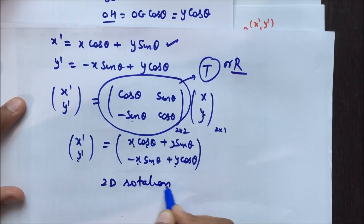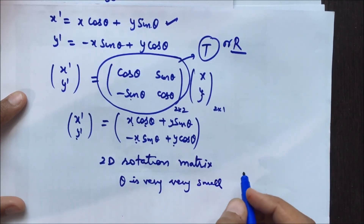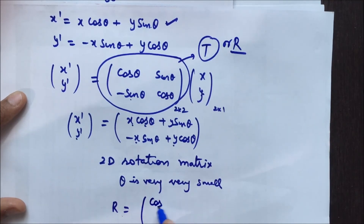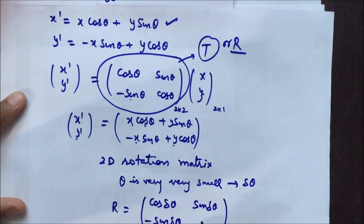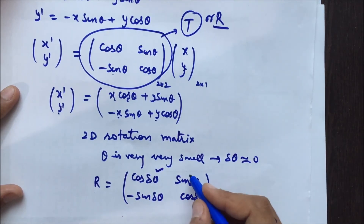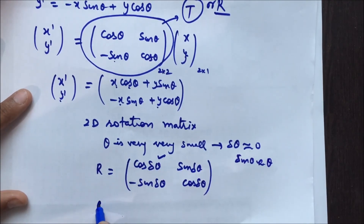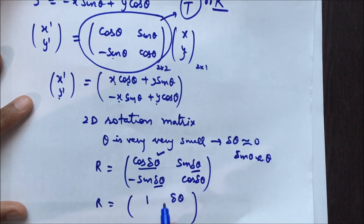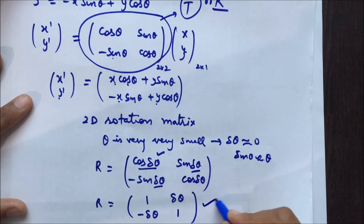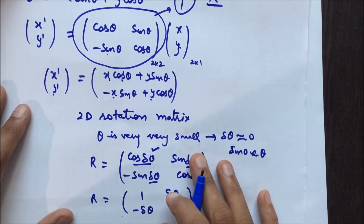One more thing: if the angle theta is very very small, say delta-theta, the rotation matrix R becomes [cos(delta-theta), sin(delta-theta); -sin(delta-theta), cos(delta-theta)]. For very small delta-theta, cos(delta-theta) approximates to 1 and sin(delta-theta) approximates to delta-theta, so the rotation matrix simplifies to [1, delta-theta; -delta-theta, 1]. This is all about the rotation matrix.